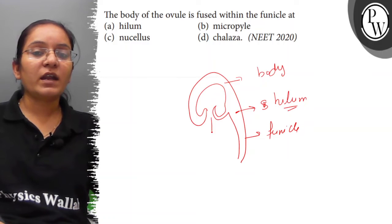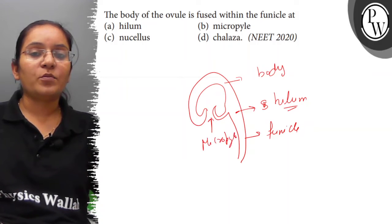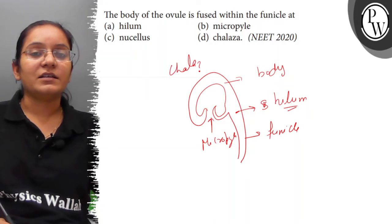While the point where integument is absent is called Micropyle, and opposite to Micropyle is Chalaza. This is Chalaza opposite to Micropyle.